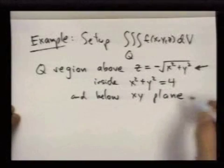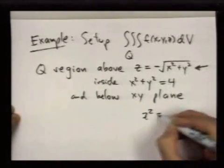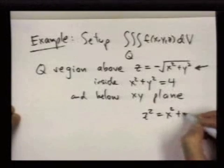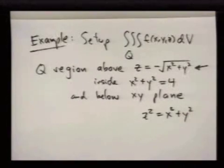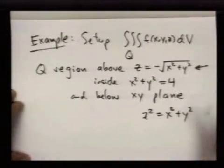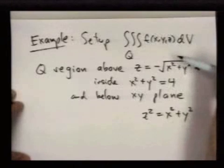Well, if you square both sides, you get this equation z² = x² + y². And I hope you recognize from the section on quadric surfaces that this is a cone, and we're just taking the bottom portion of a cone.